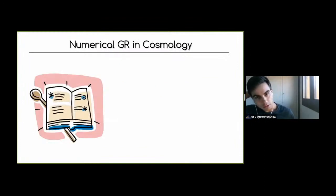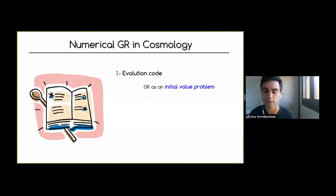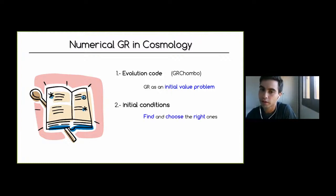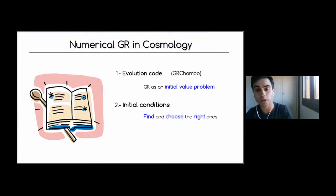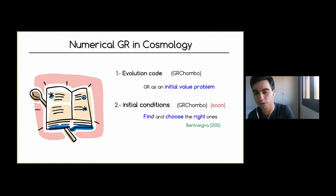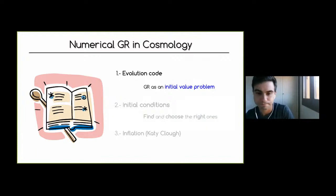The recipe for starting a numerical GR problem in cosmology: first we need some evolution code. We have to formulate GR as an initial value problem, which means we put some initial data and then evolve it with evolution equations. The code we are using is GRChombo. Once we have the problem set up as an initial value problem, we need the initial conditions — we need to find and choose the right ones. We are working on an initial condition solver to solve the Hamiltonian and momentum constraints.